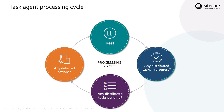The important thing to note here is that there is a priority to these operations. So it's quite likely that if you have a very big distributed task in progress, all of your task agents will eventually end up processing that task. And if you add a deferred action in at that moment, it may not be processed for a while until one of the task agents finishes off its slice of work from the distributed task and is freed up to go and execute the deferred action.